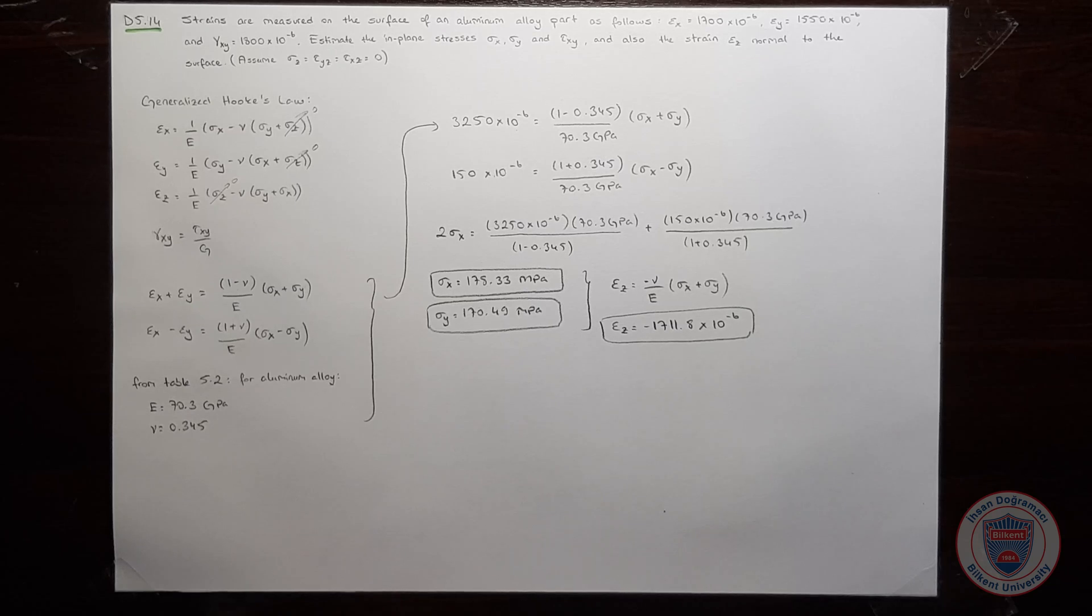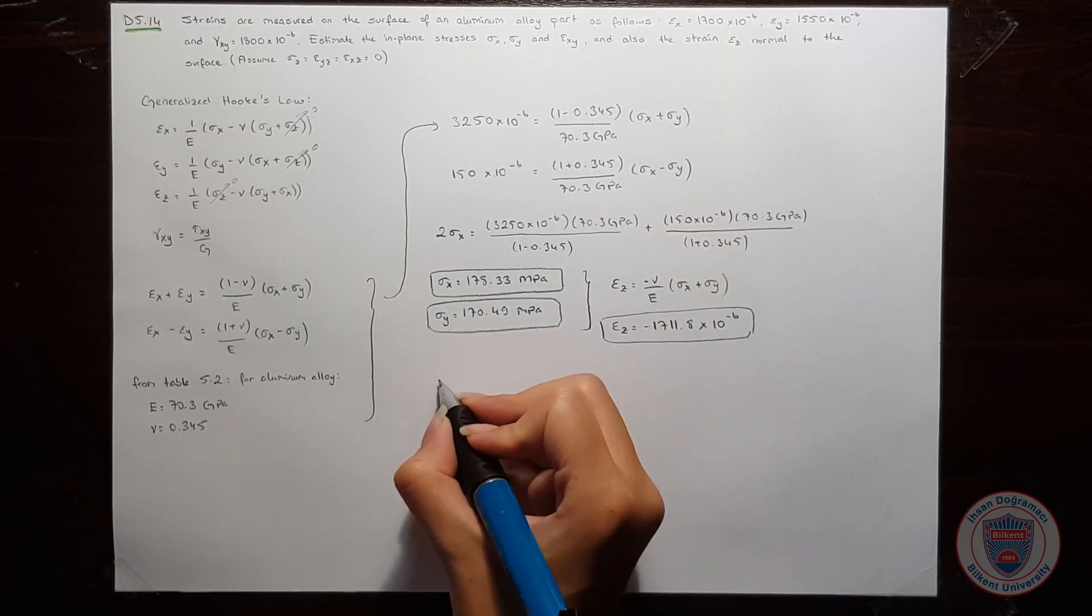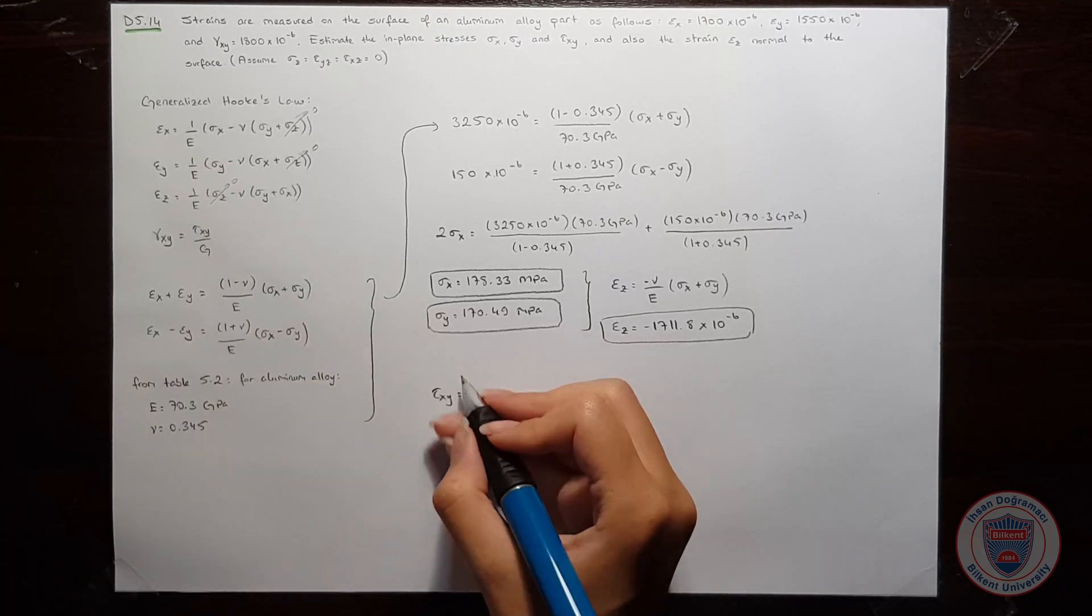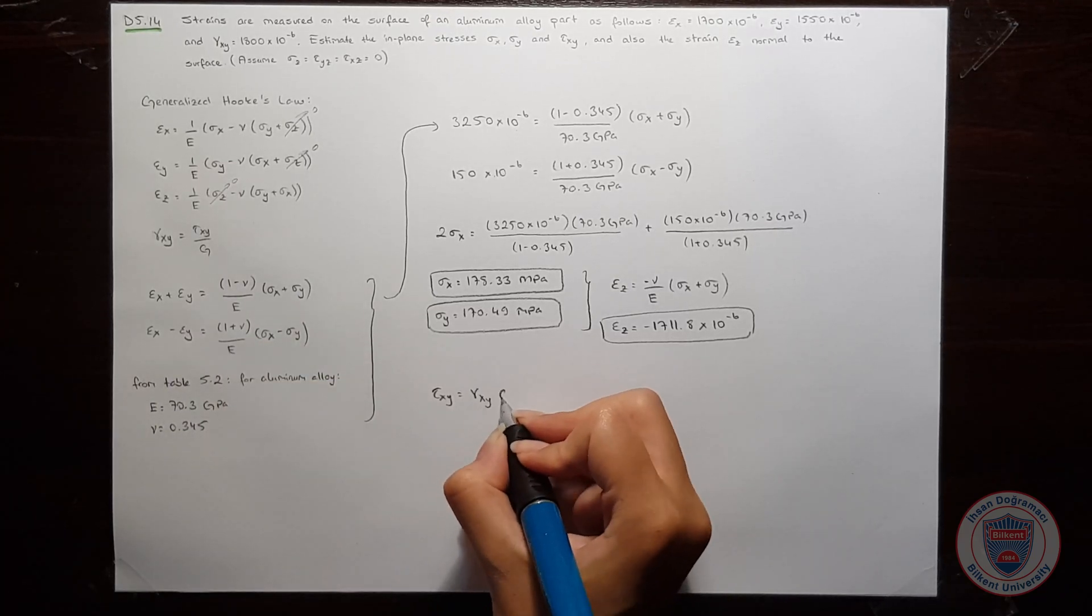Let's finally calculate tau xy. We know that tau xy is equal to gamma xy times g.